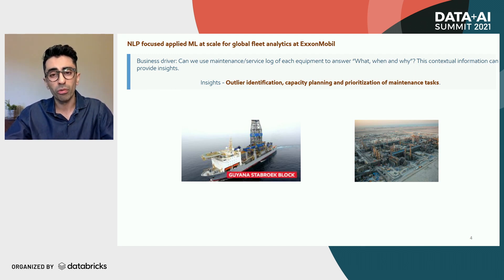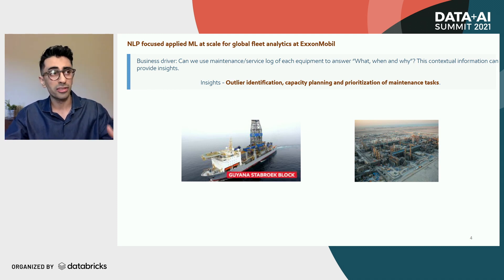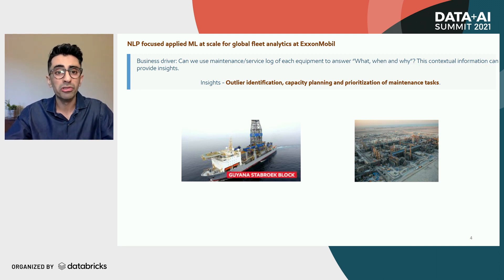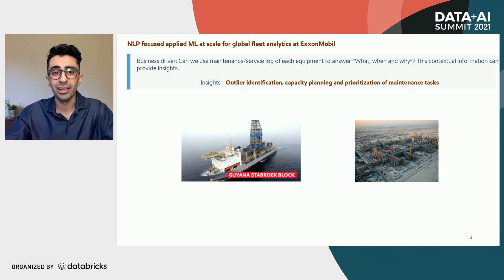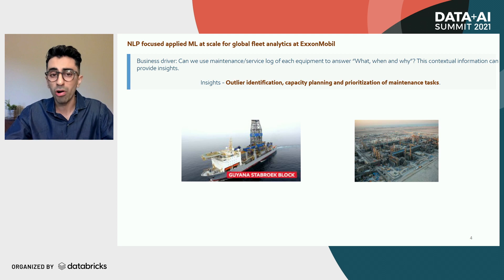By answering those three fundamental questions, we can put together a story that helps our end user drive insights toward what's an outlier — does a specific piece of equipment fail faster than others? It can help with capacity planning, prioritization of maintenance tasks, and ultimately impact the bottom line. It is projected that this product can help the corporation save millions of dollars on an annual basis.